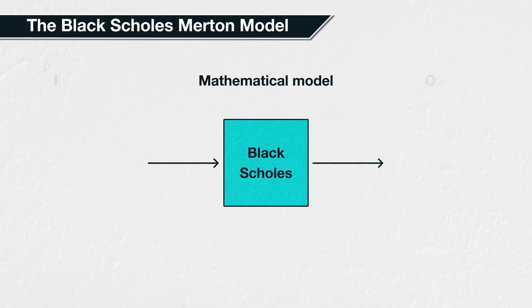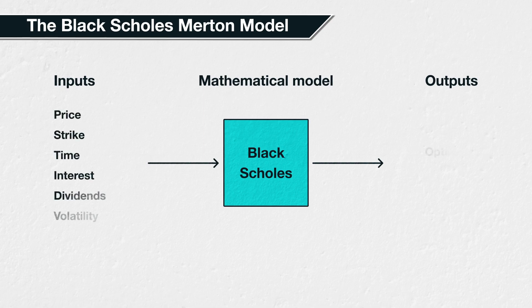One area where modelling is often used is finance. The Black-Scholes-Merton model, often shortened to just Black-Scholes, is a mathematical model for pricing European option contracts. It was first published in 1973, but is still used widely today. The model has five inputs and several useful outputs, the main output being the option price.